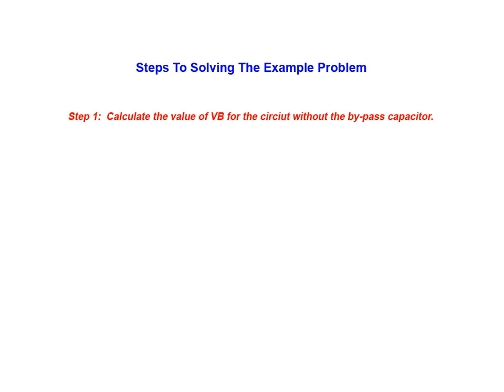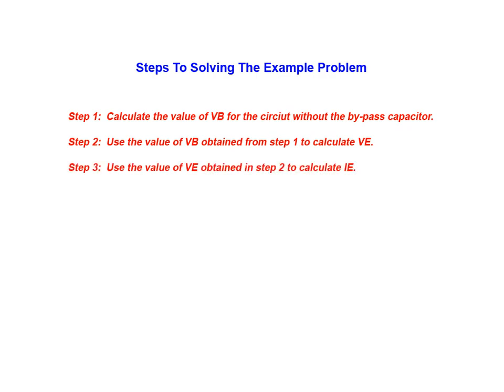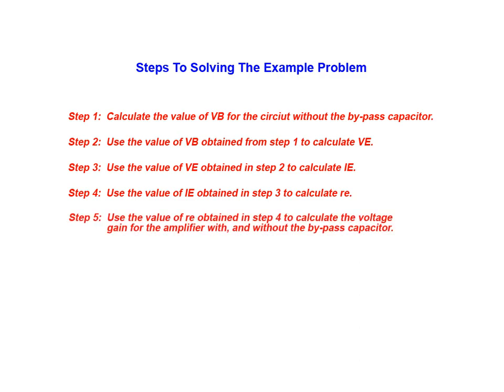We begin by calculating the base voltage for the circuit without the bypass capacitor. We then use the value of base voltage obtained from step 1 to calculate the voltage appearing at the emitter. The emitter voltage is used to calculate emitter current. Once we've obtained the emitter current we use it to calculate the internal resistance of the transistor. Next we use the internal resistance value to calculate the gain for the amplifier with and without the bypass capacitor. In the last step of the process we compare the voltage gain of the circuit under both conditions.